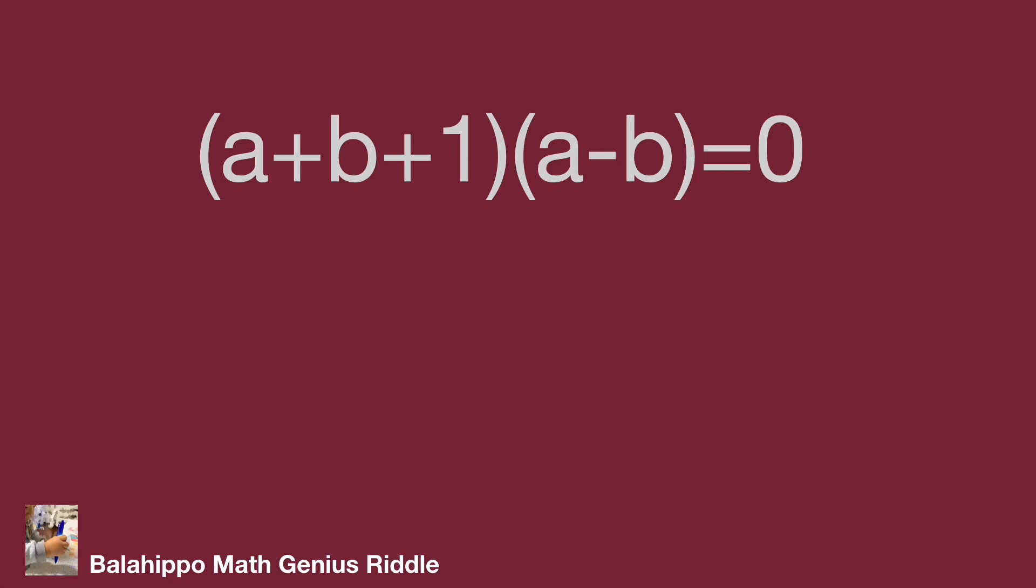Due to a not equal to b, so a minus b not equal to 0. Then a plus b plus 1 equal to 0.